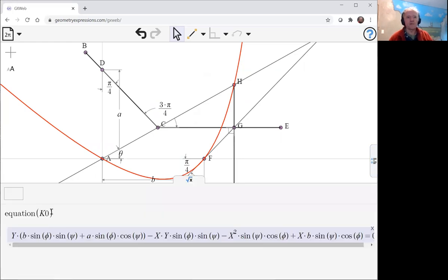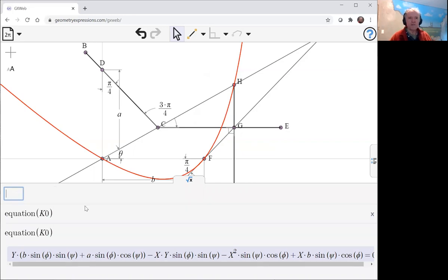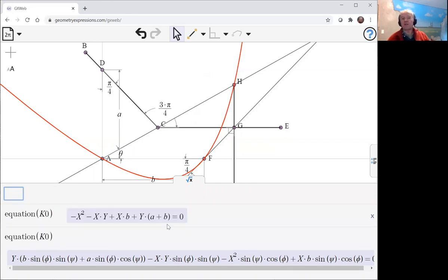And if you look at the equation of k naught, clearly the sines and cosines of phi and psi are going to simplify. I'd have that equation there.